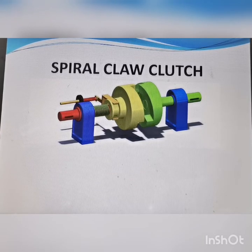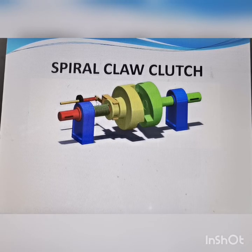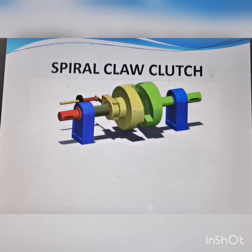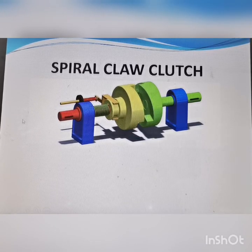The second type of positive clutch is the spiral claw clutch. It has a driven shaft, a drive shaft, and a lever which pulls the drive shaft away from the driven shaft. There is also a spring which provides the axial force pushing the shaft toward the driven shaft to ensure engagement. It is named after its spiral shape.